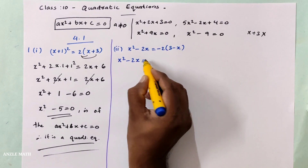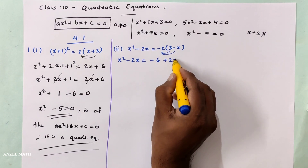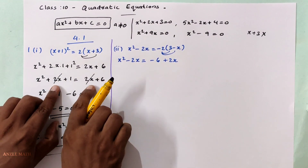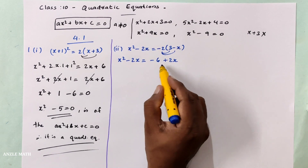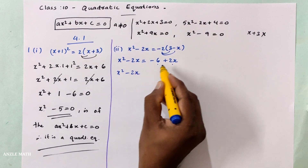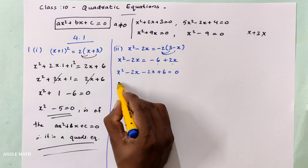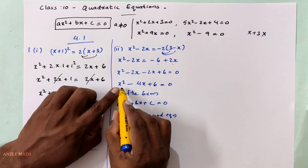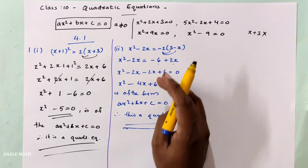For the second question, we should expand the left side and the right side. After expanding and simplifying, we get x² minus 4x plus 6 equals 0. This is of the form ax² plus bx plus c, so this is a quadratic equation.